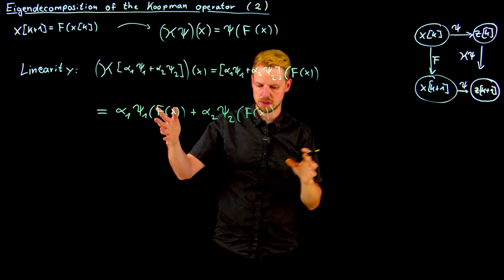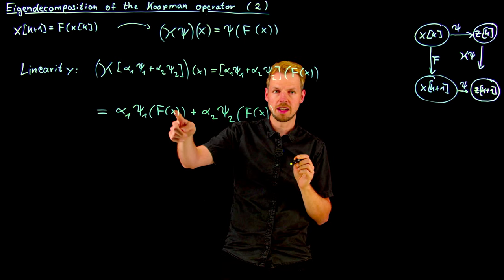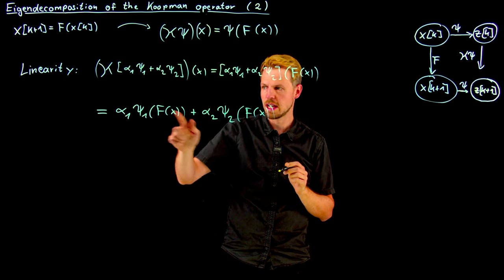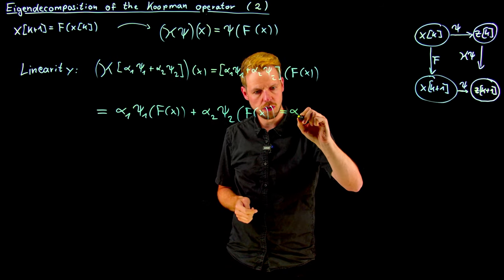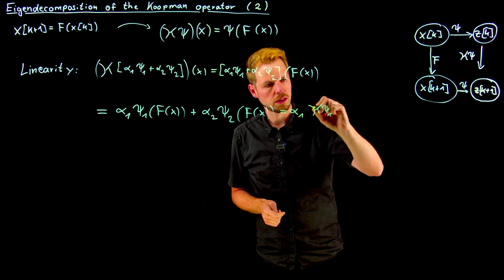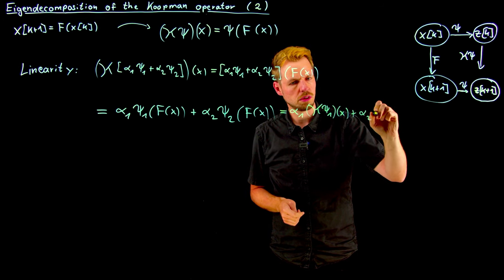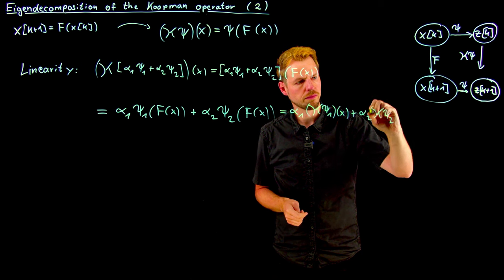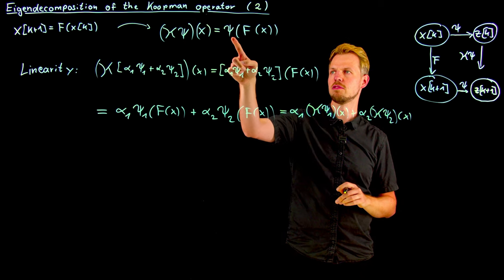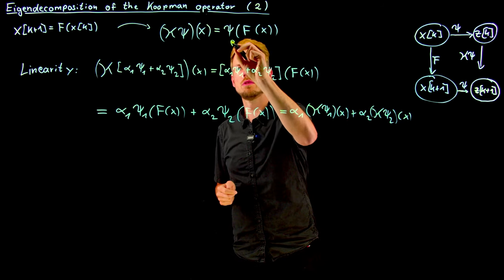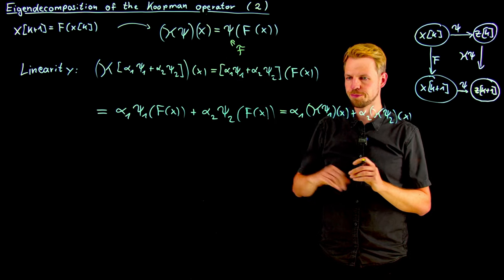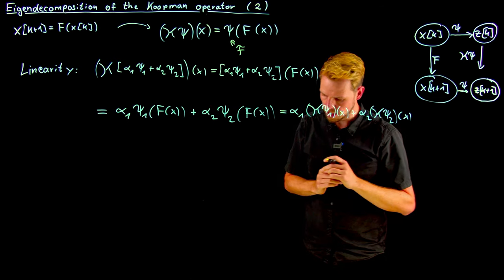You already see there's not much to do really. This is exactly now the definition of the Koopman operator again applied to these individual elements. So what we get is alpha_1 K psi_1 of x plus alpha_2 K psi_2 of x. So you see, due to the linearity of the function space F where psi is an element of, we can exploit this linearity and we're basically done.